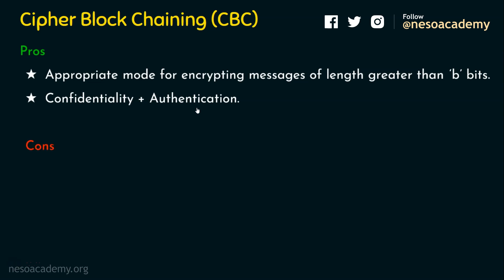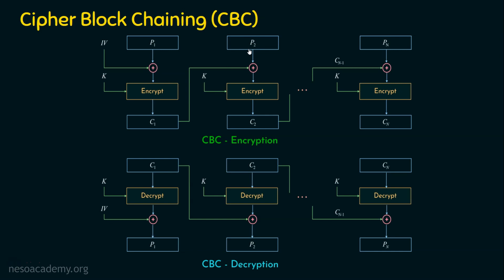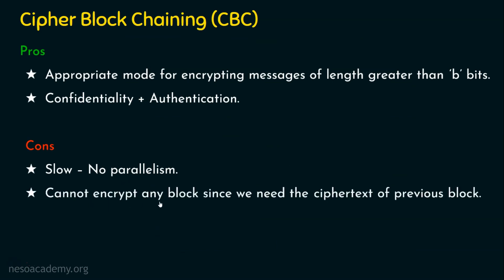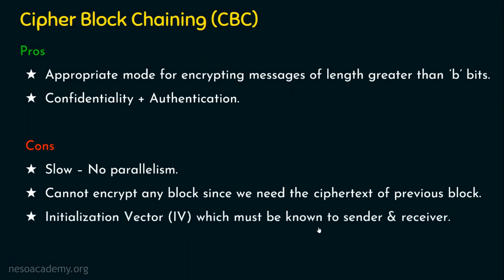Not only that, since CBC uses an initialization vector, the operation of CBC not only provides confidentiality but also authentication, because the initialization vector is known to both the sender and the receiver. When a receiver gets the message, they can be 100% sure the message is from the source because they know what initialization vector is being used. Coming to the cons: the first drawback is slowness, because we lost the parallelism of ECB. You cannot just encrypt any block you want — for example, to encrypt P2, you certainly need C1. For encrypting any block, you need the previous block, so parallelism is not possible.